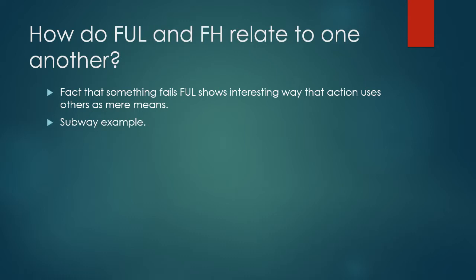The question then is: how do these two principles — the formula of universal law (FUL) and the formula of humanity (FH) — relate to each other? Are they independent principles? If so, which one are you supposed to use? Well, Kant thinks they're actually the same principle — different ways of getting at the same point. Kant might not be right about that, but I do think they're really closely related. You can see this if you think about how and why some actions fail the formula of universal law.